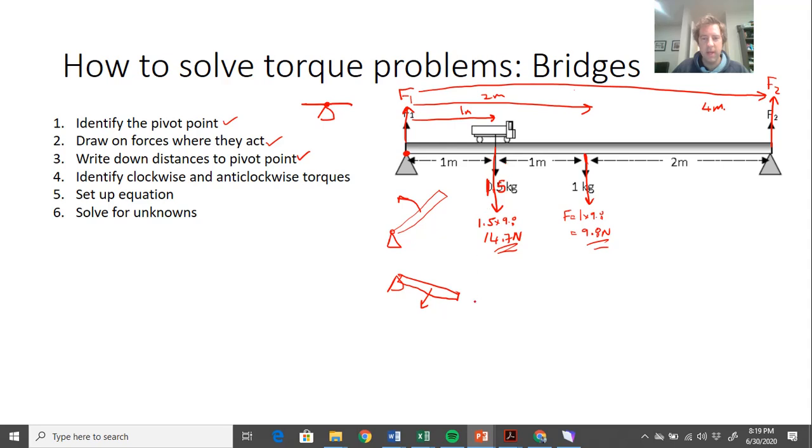This is clockwise, and this is anti-clockwise. What's my forces trying to rotate it clockwise? The truck is one of the ones pulling it down this way, and the weight of the bridge, that's a clockwise force as well. And then what's pulling it back the other way? This F2. So this is an anti-clockwise torque.